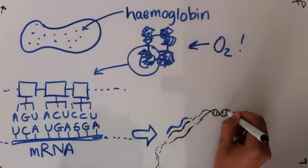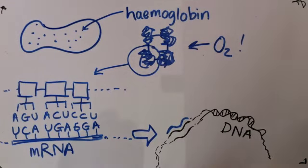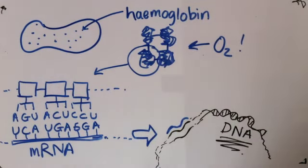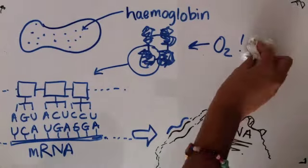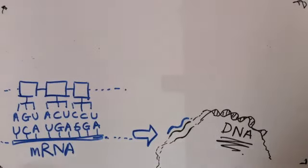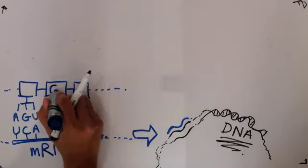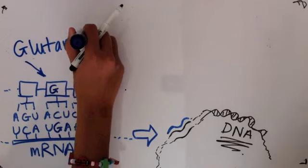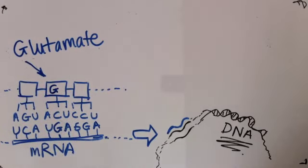So what went wrong in sickle cell anemia? Some sort of mutation occurred in the sequence of bases in the gene. It's actually a substitution mutation, as suggested in the name. One of the bases is substituted with a different one.